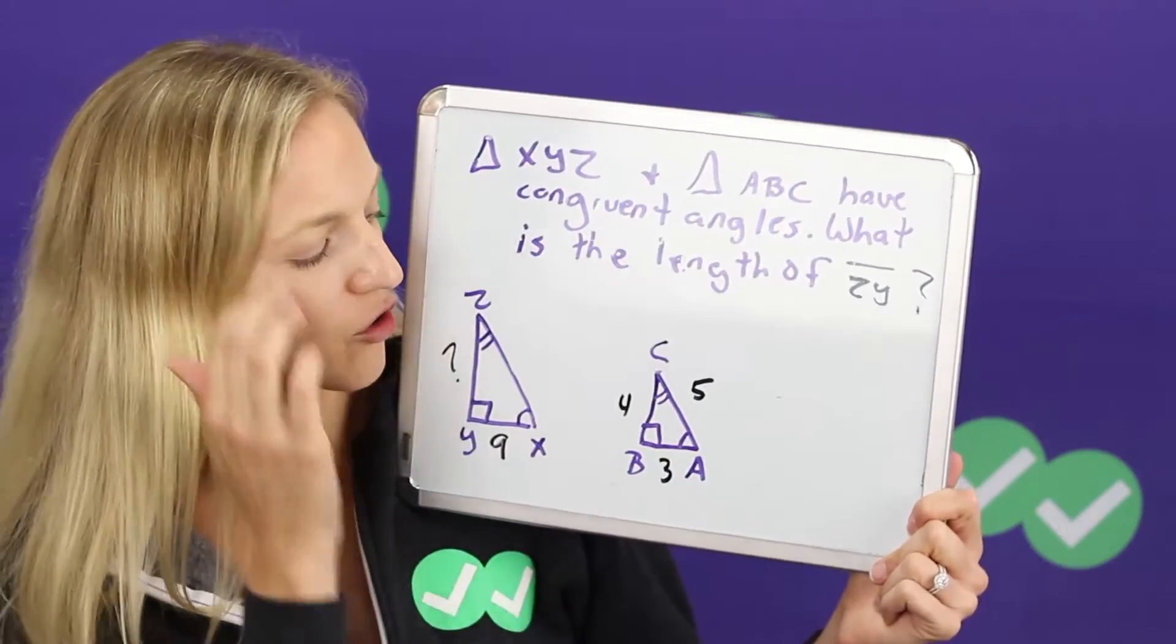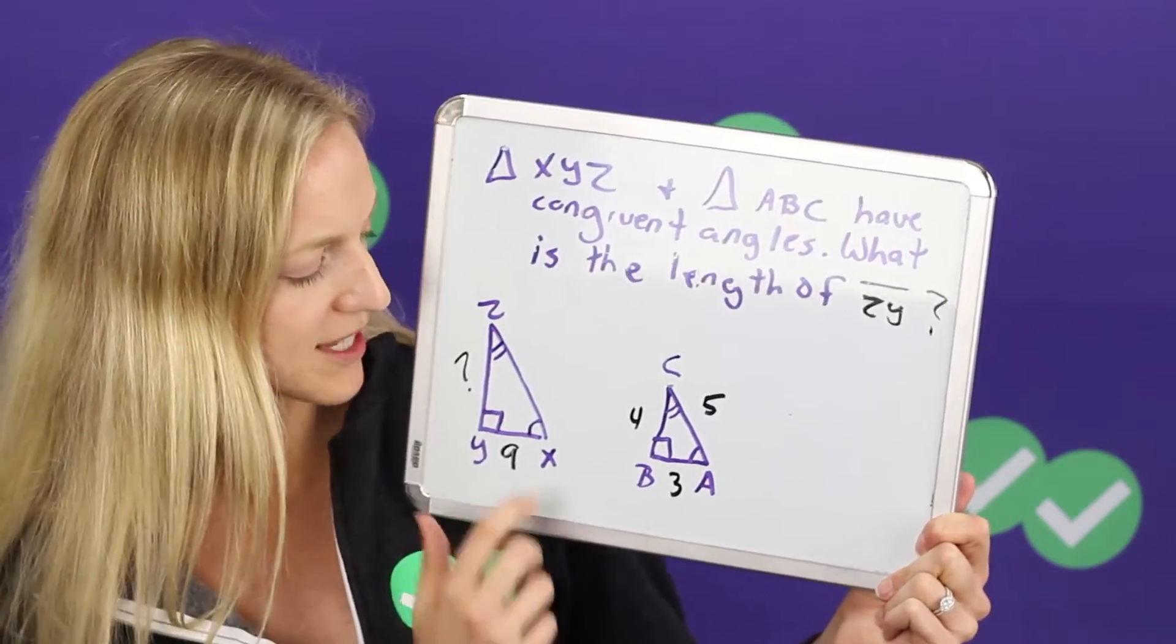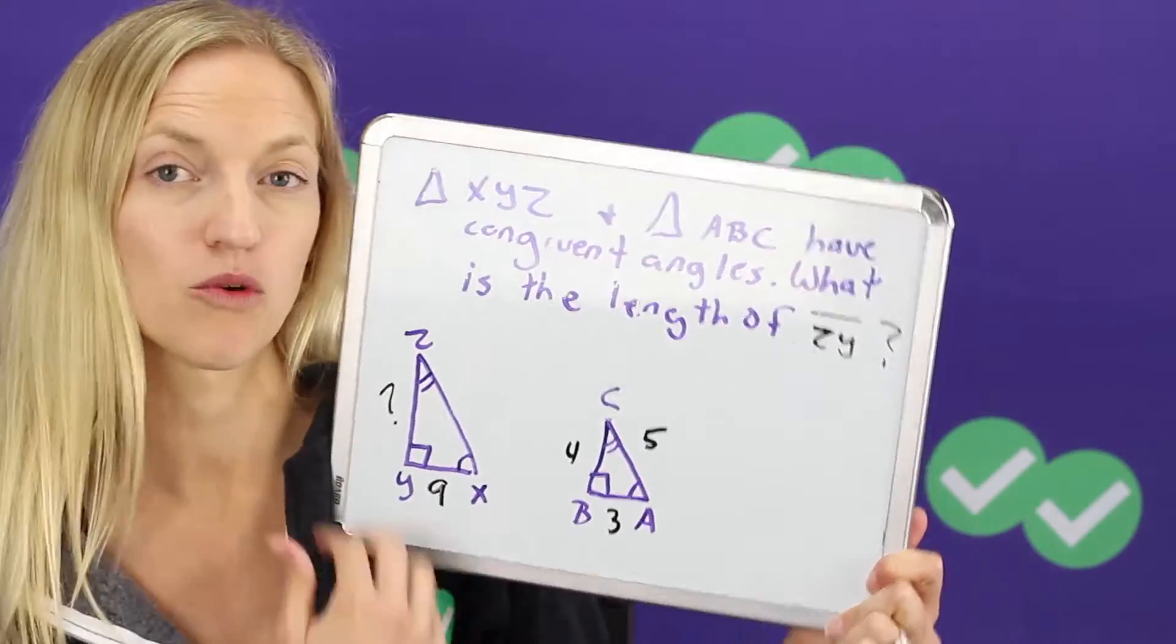So the question, let's look at a sample question like you might see on the ACT. It's always going to either let you know that they're congruent or give you those signals that they are congruent within the diagram.